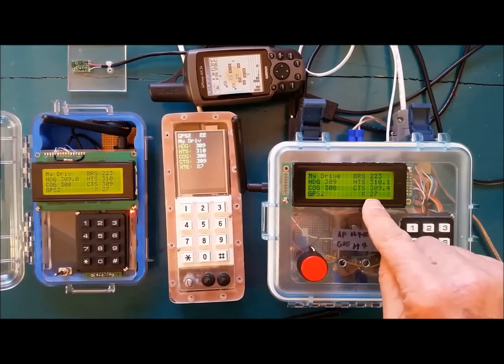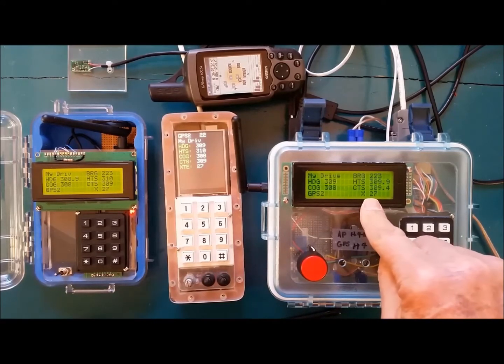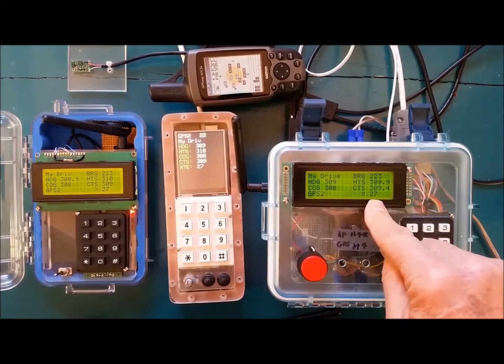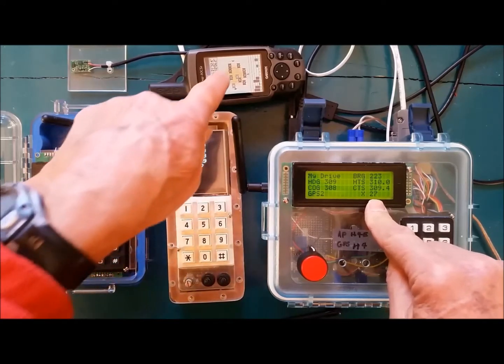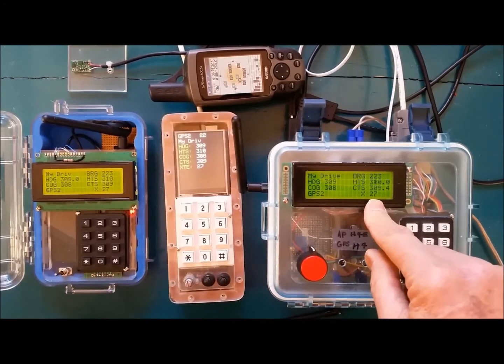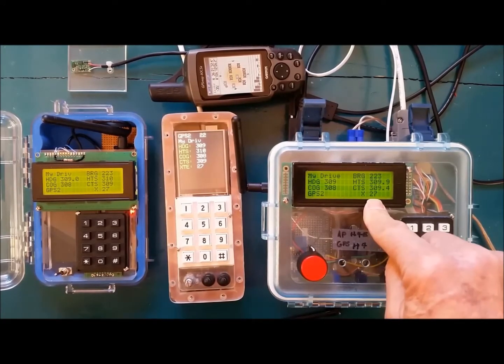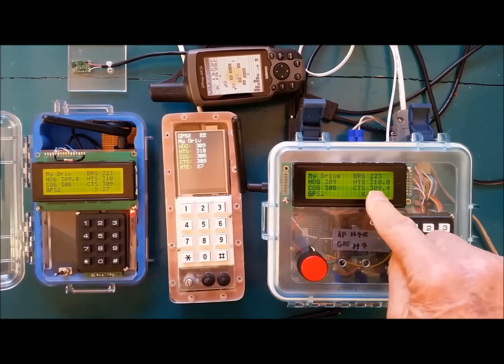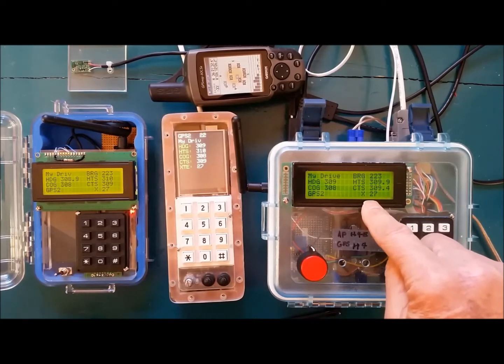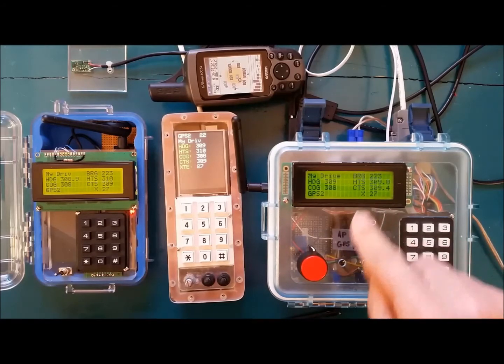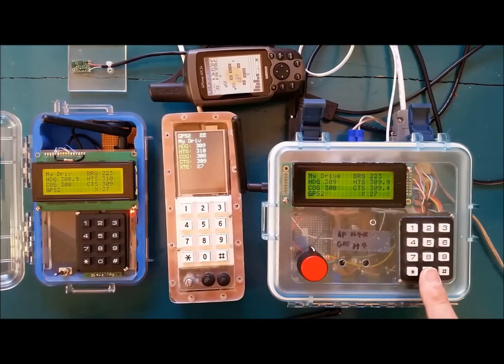All right. Now, also on the screen, this is the cross-track error. Currently, that is 27 feet. That's just based on how I have the GPS laid out here at this location. But this is the main parameter that the course to steer is modified by so that you will stay on the original course if you're in the GPS mode. Let's take this back to off.